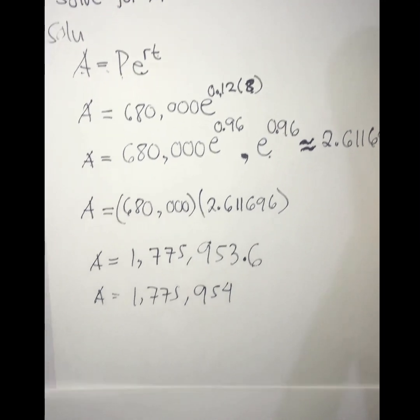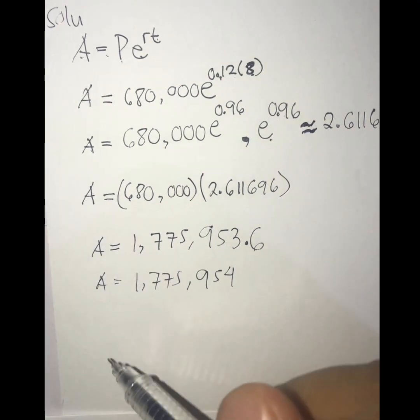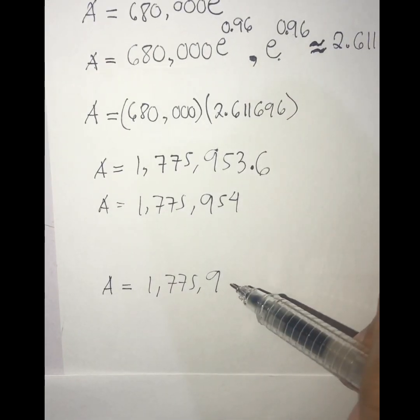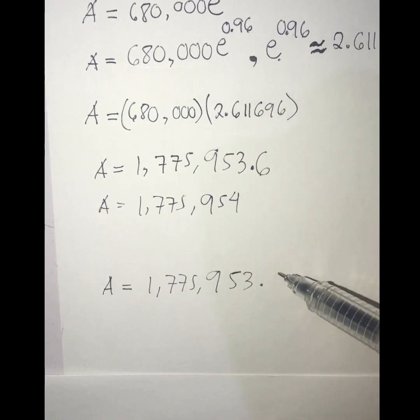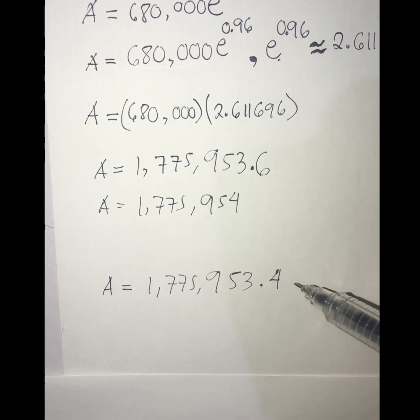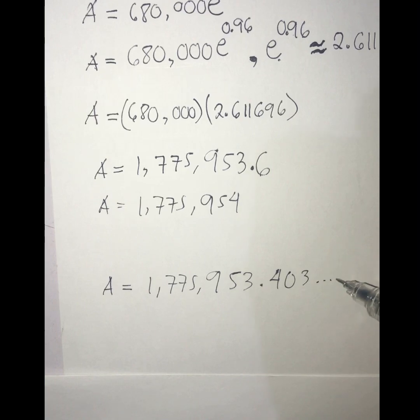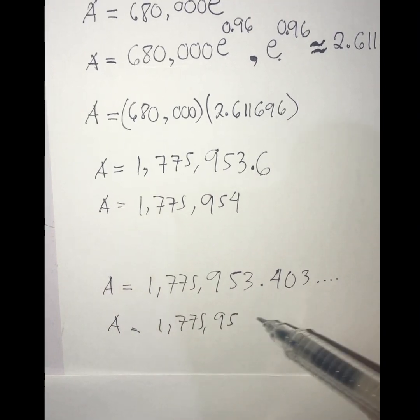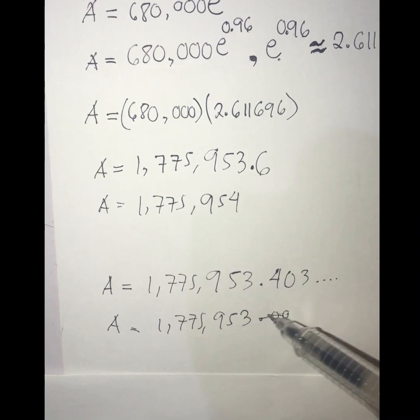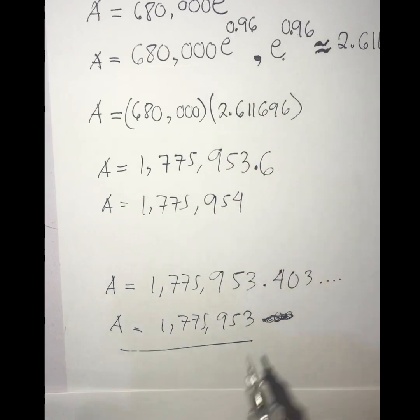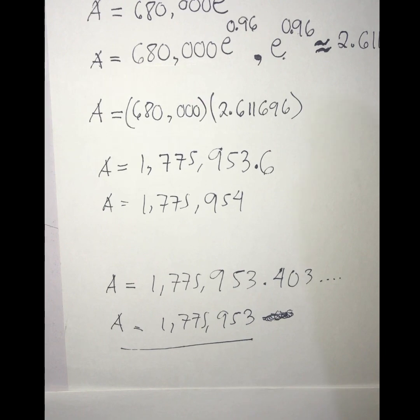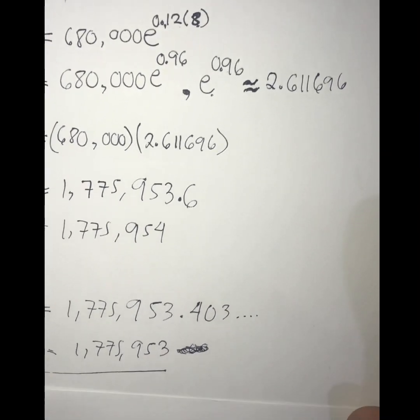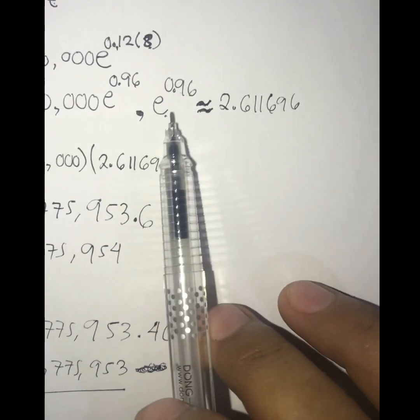Or else, if you've got this answer, let's say we have A equals 1,775,953, let's say it's less than 6, or shall we say something like this one, then you will round off this number into 1,775,953. If you've got this answer, then I will consider your answer as correct, because there is a little error in our solution when it comes to rounding off the numbers and getting the value of this one.